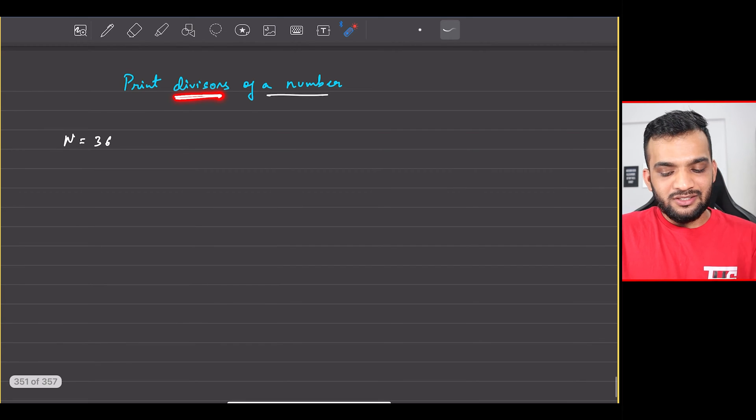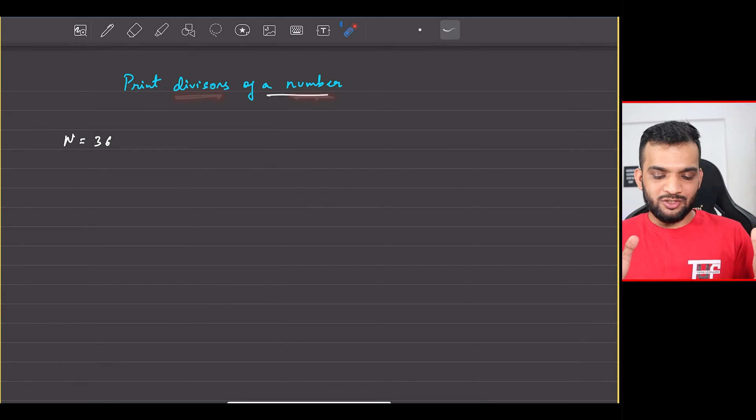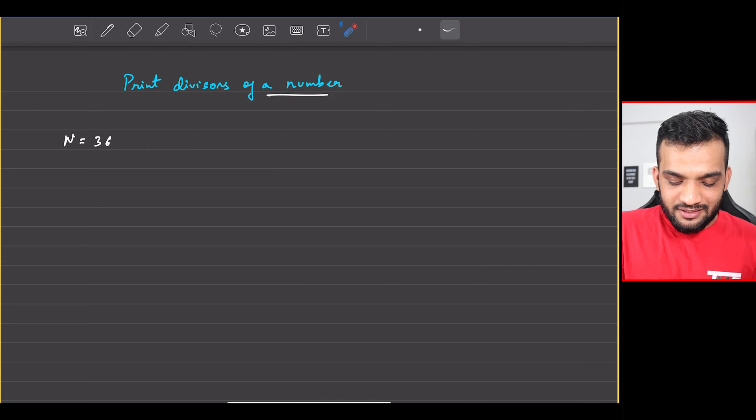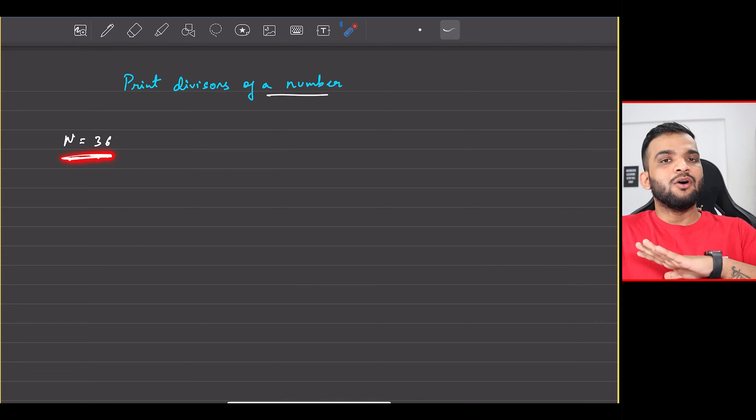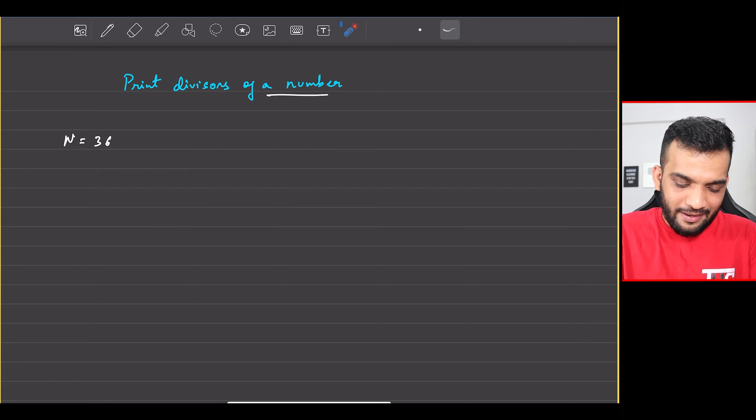is printing divisors of a number. What is the problem exactly stating? It's stating that you'll be given N equal to 36 and you'll have to return me all the divisors of this particular number. Order doesn't matter.